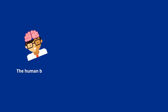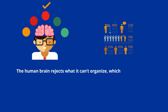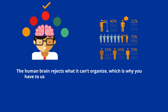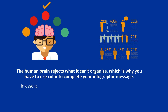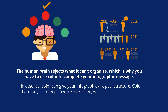The human brain rejects what it can't organize, which is why you have to use color to complete your infographic message. In essence, color can give your infographic a logical structure. Color harmony also keeps people interested, which is a great way to get your infographic to go viral.